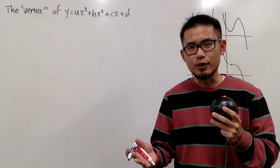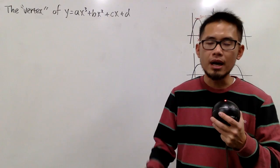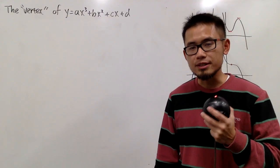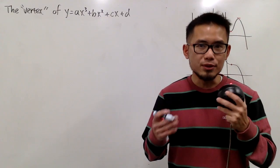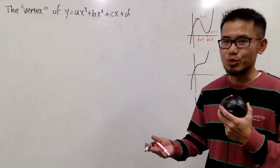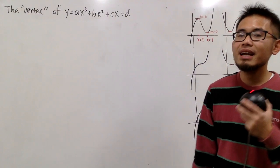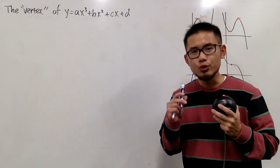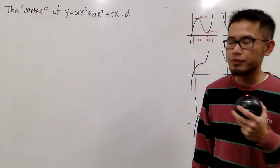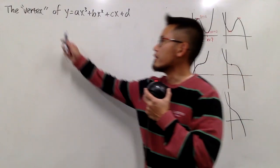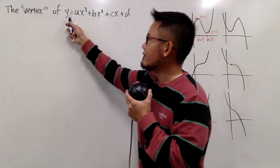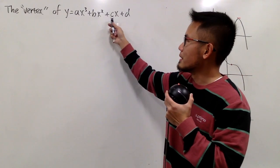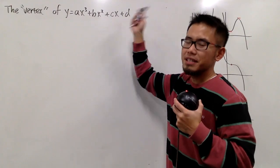Last time I showed you guys how to find the vertex of a parabola, where we use the algebra of completing the square, and we also talked about calculus where we took the derivative. This time, let's talk about how to find the vertex of a cubic curve, namely the vertex of the graph of y equal to ax³ plus bx² plus cx plus d.